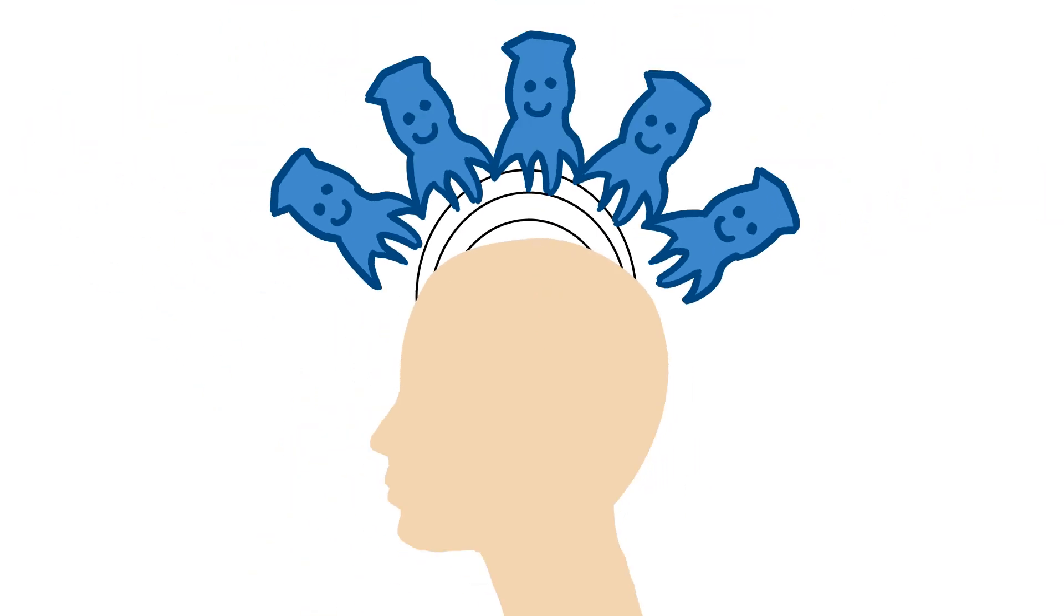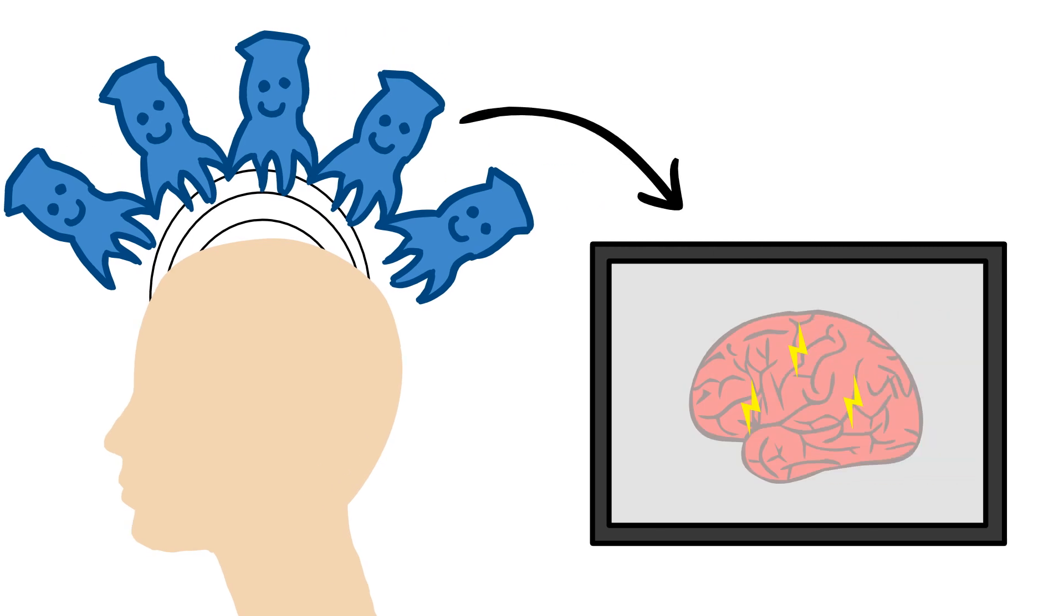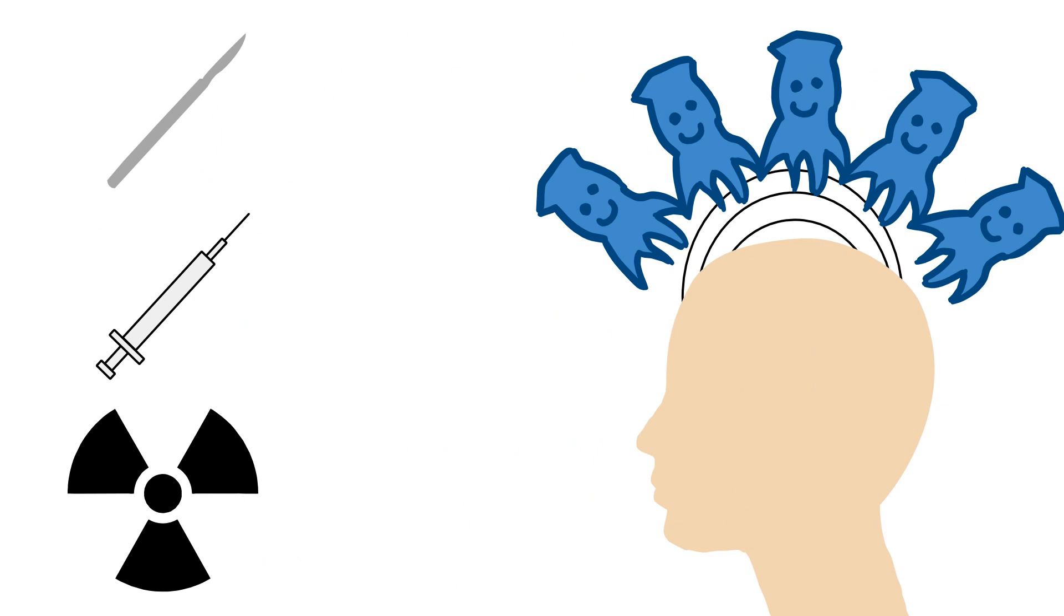But overall, MEG is still a pretty great brain imaging technique, partly because the process is so easy – the subject just sticks their head in the helmet, lies very still, and a detailed record is made of their brain activity. It's non-invasive, meaning we don't have to cut anyone open, or inject anything, or expose anyone to radiation, which a lot of the other techniques do involve.